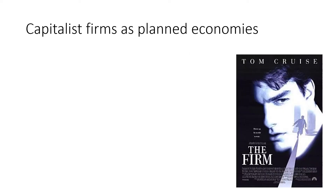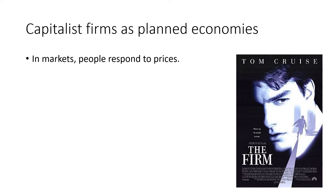Earlier we described firms as concentrations of economic power, and so we can utilize the example of capitalist firms as planned economies. In markets, people respond to prices — for example, if you have two gas stations across the street from each other, you'll respond to whichever price is lower and purchase your gas there. However, in firms, people do not respond to prices — they follow orders.